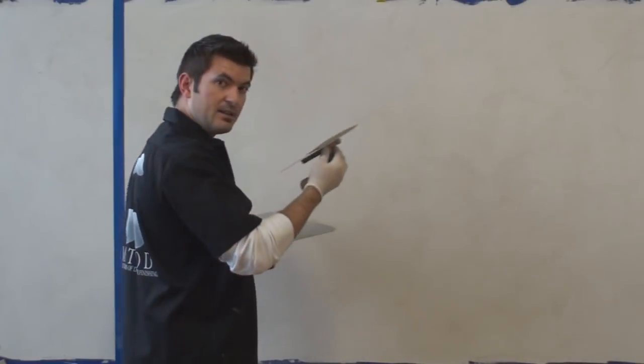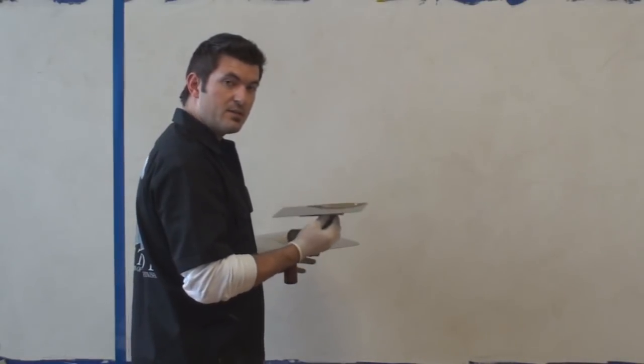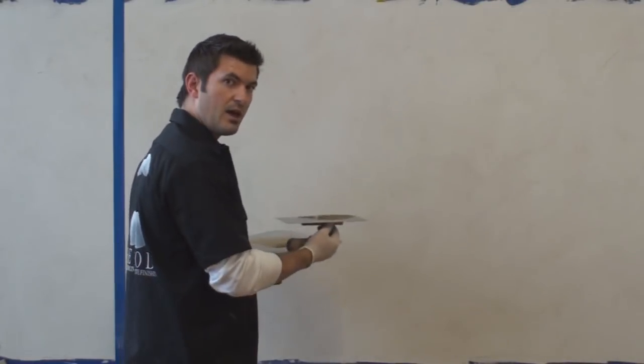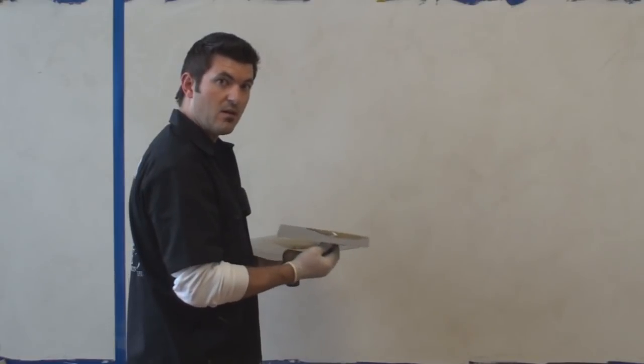So when I trowel it, I need to kind of pay attention to how I'm working the space because you've got to keep that entire line moving while you're troweling, otherwise you're going to get a hard line.